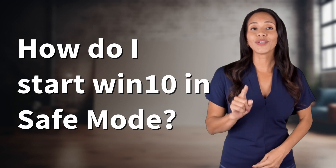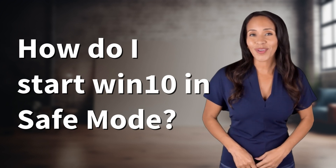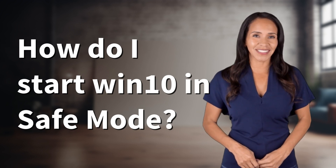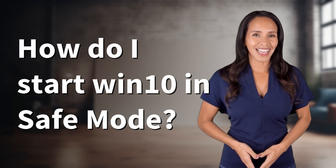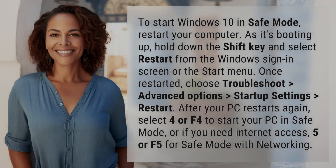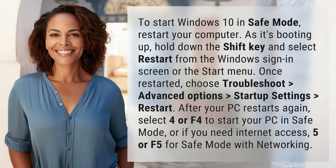Unlocking answers to your most sought-after questions. What's in the Knowledge Vault today? To start Windows 10 in Safe Mode, restart your computer. As it's booting up, hold down the Shift key and select Restart from the Windows sign-in screen or the Start menu.